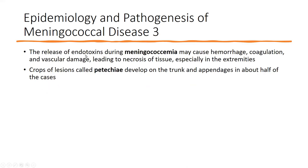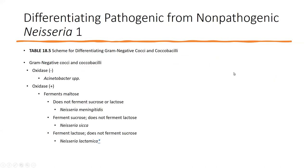When endotoxins are released, you can see hemorrhage, coagulation, vascular damage, and tissue death. If caught fast it's treatable, but the longer it goes, the more severe and permanent the damage. Because of the hemorrhage and coagulation response the endotoxin causes systemically, you can get the petechiae associated with meningitis — that non-blanching rash — but it only occurs in about 50% of cases.